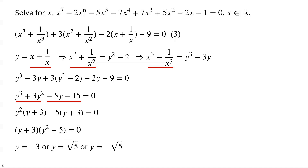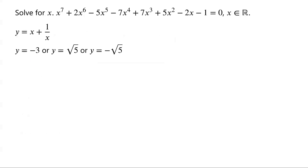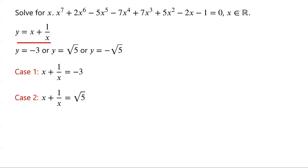So either y equals negative 3, or y equals root 5, or y equals negative root 5. Note that y equals x plus 1 over x. The problem is divided into three cases: Case 1: x plus 1 over x equals negative 3. Case 2: x plus 1 over x equals root 5. Case 3: x plus 1 over x equals negative root 5.